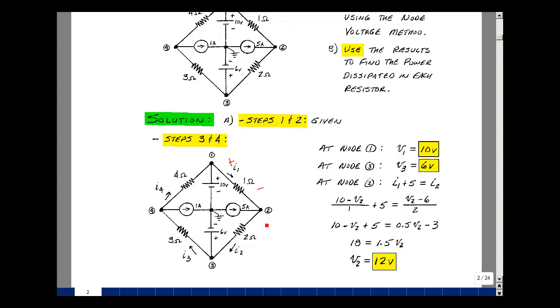And then leaving, we have the current in this element, which is going to be node voltage 2 minus node voltage 3, but node voltage 3 is equal to 6 volts, so V2 minus 6 divided by 2 ohms. I have 10 minus V2 plus 5, a half times V2, and then minus 3. Let's bring this on the other side of the equation as a plus. I have plus 3, plus 5, plus 10, or 18. Put this on the other side of the equation, so I get 1 plus a half, or 1 and a half times V2. V2 is equal to 12 volts.